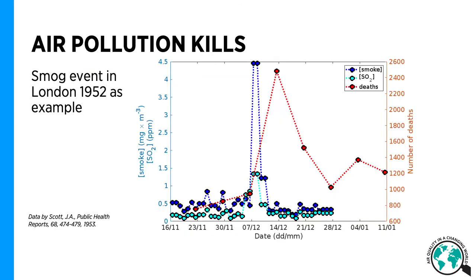One famous example of classic smog is the smog event in London in December 1952. For about four days, the concentrations of SO2 and aerosol particles — indicated in the figure as smoke — accumulated due to a temperature inversion. Many died more or less immediately as a result, and the amount of recorded deaths continued to be higher than average for at least one month after this episode.